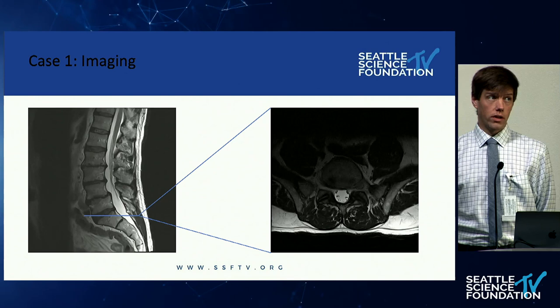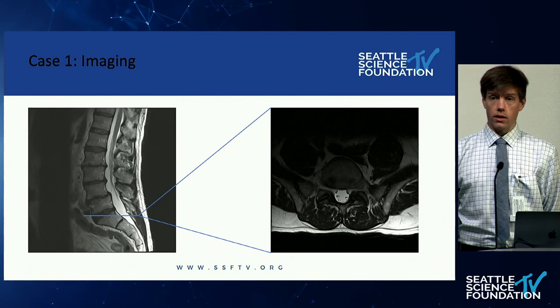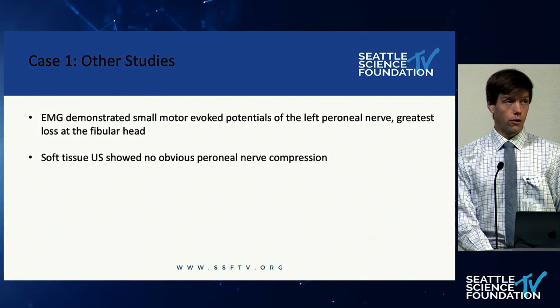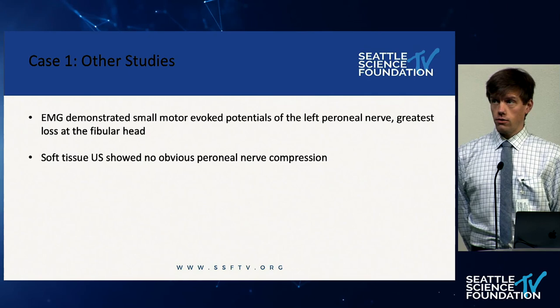Here's an MRI. It does show some posterior herniation of discs with a little bit of mild central canal stenosis, but again nothing that would obviously explain his foot drop. He did have an EMG done as well, which showed small motor evoked potentials of the left peroneal nerve, and the greatest loss was at the fibular head. Soft tissue ultrasound demonstrated no obvious peroneal nerve compression.